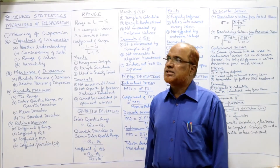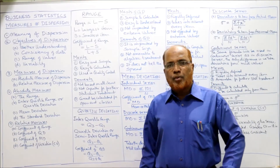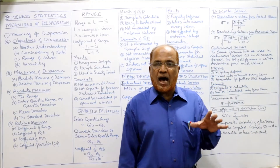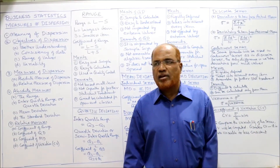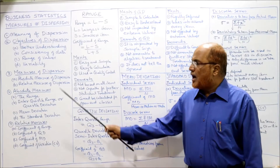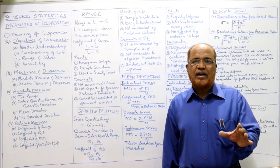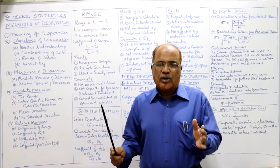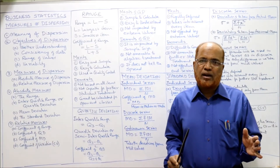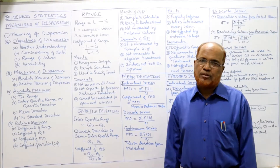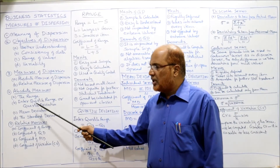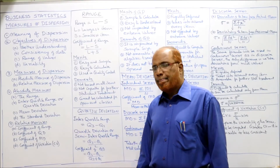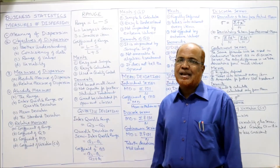Measures of dispersion are broadly divided into two categories: absolute measure of dispersion and relative measure of dispersion. Absolute measures simply find out the variability of a particular data. The absolute measures are range, interquartile range or quartile deviation, mean deviation, and standard deviation. These are called the absolute measures of dispersion.